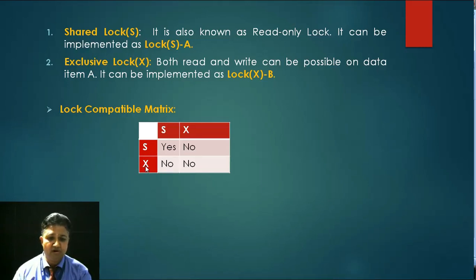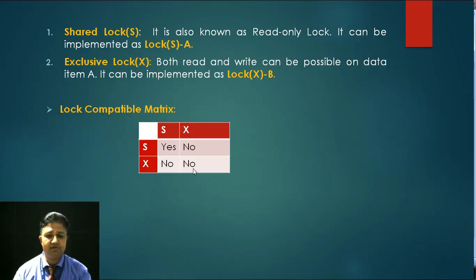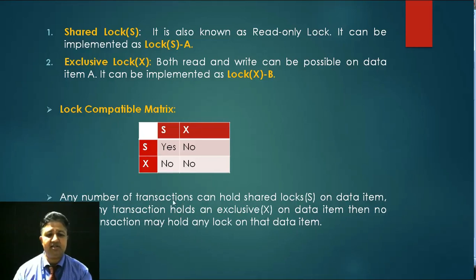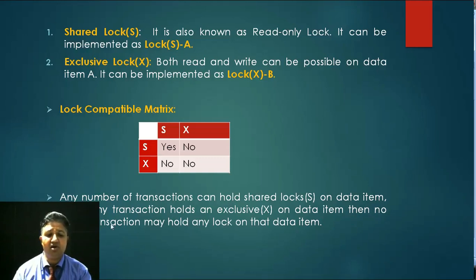Similarly, if one transaction has an exclusive lock and another transaction requires a shared lock on the data item, that is also not possible. And if one transaction holds an exclusive lock and another transaction also requires an exclusive lock on the same data item, that condition is also not possible. So any number of transactions can hold shared locks on a data item, but if any transaction holds an exclusive lock, no other transaction may hold any lock on that data item.